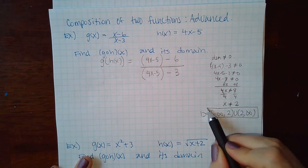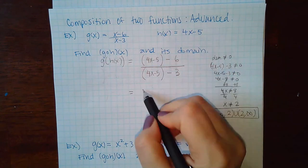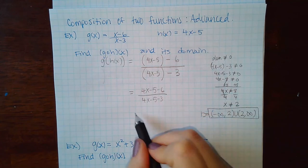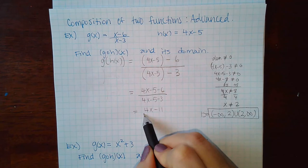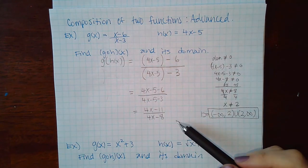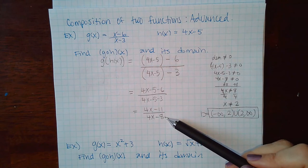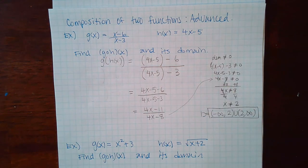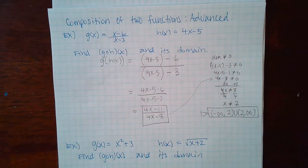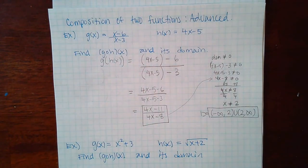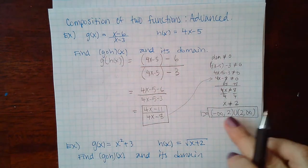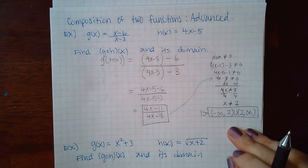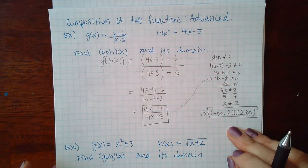Now simplify: (4x−5−6) over (4x−5−3) = (4x−11)/(4x−8). Notice that if you had found the domain after simplifying you'd get the same answer here — but that is pure coincidence and does not always happen. Don't rely on simplifying first.